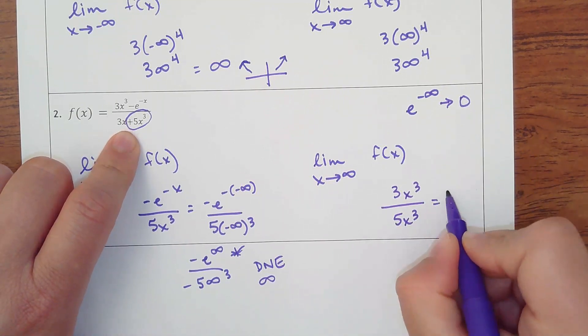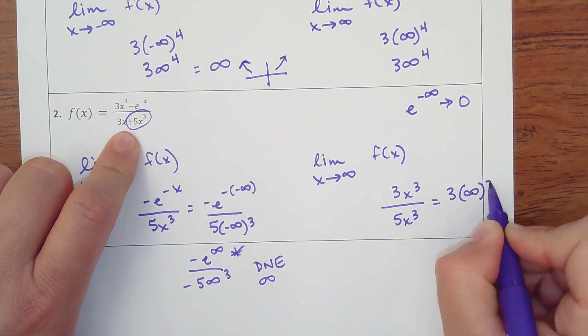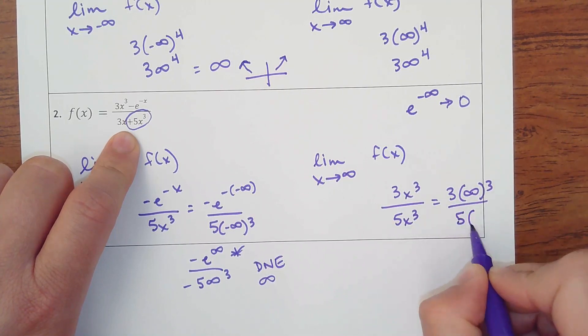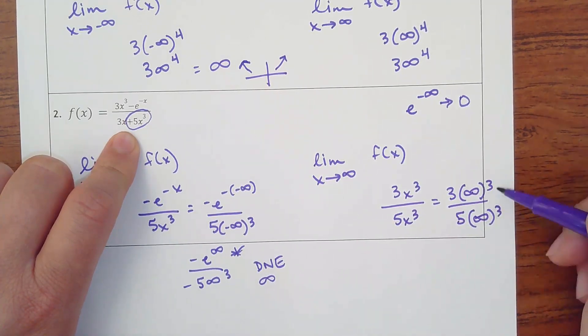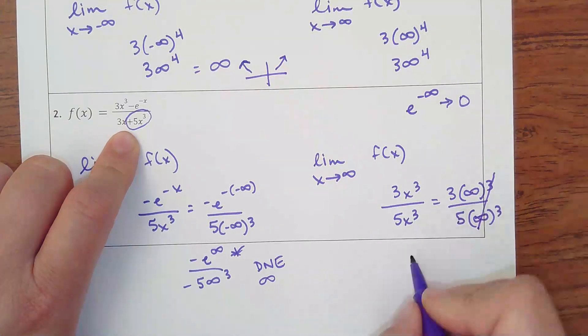I want to use the 3x cubed over the 5x cubed, plug in my infinity, even though I really don't need to on this one, because I can already see what's happening. I can see that everything's positive and these cancel and I get 3 fifths.